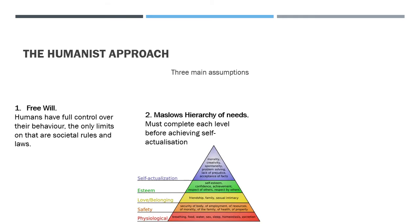The second assumption is Maslow's hierarchy of needs, which has five stages: physiological, safety, love and belonging, esteem, and self-actualisation. Each level must be completed before achieving self-actualisation, and that is what humans are striving towards.